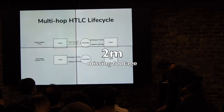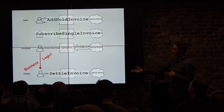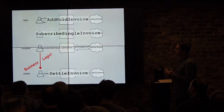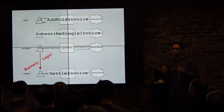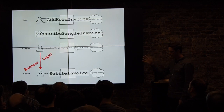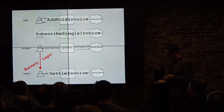Specifically for LND, the RPCs that have been added are in the new Invoices RPC subserver that Connor mentioned. The first one is Add Hold Invoice — it's actually a different RPC than the old Add Invoice. Then Subscribe Single Invoice, which is different from Subscribe Invoices. And then there's two others to finalize the state: Settle Invoice and Cancel Invoice. You do have to take more responsibility because normally the node protects you from doing silly things like letting an HTLC timeout — though it will handle that in the future. But right now it gives you a lot of powerful tools to get into the lifecycle of the HTLC.